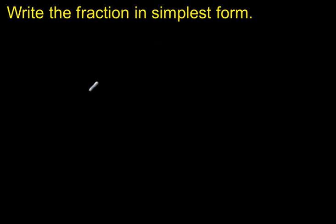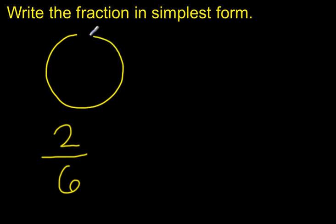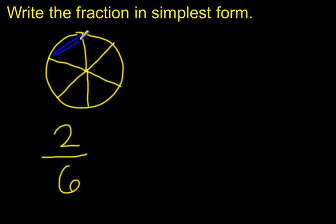Let's take a look at an example. Let's start with the fraction 2 sixths, and we'll draw a picture to show 2 sixths. I'm going to go ahead and shade 2 sixths of this picture — there's 1 sixth and 2 sixths. Now, what I want to do in simplest form is see if I can combine these pieces so that they become fewer pieces. Right now I have two pieces that are shaded, and I want to see if there's a way to write this fraction using fewer than two pieces out of six.